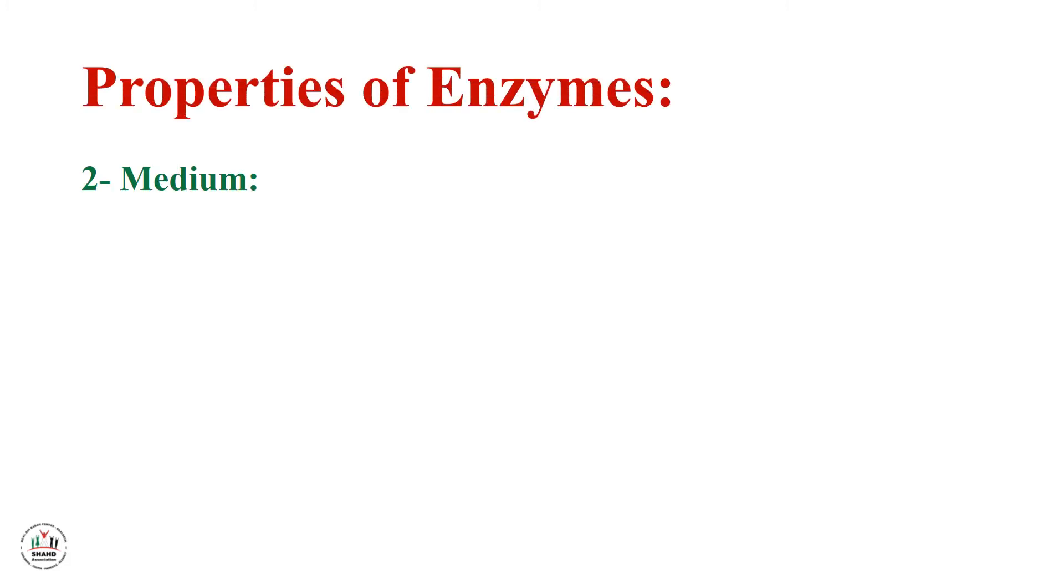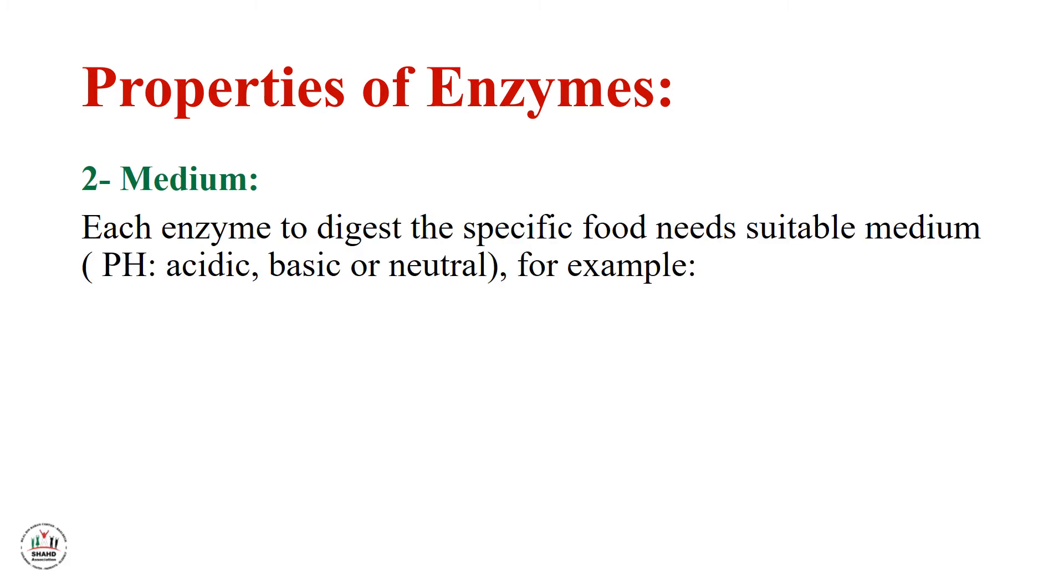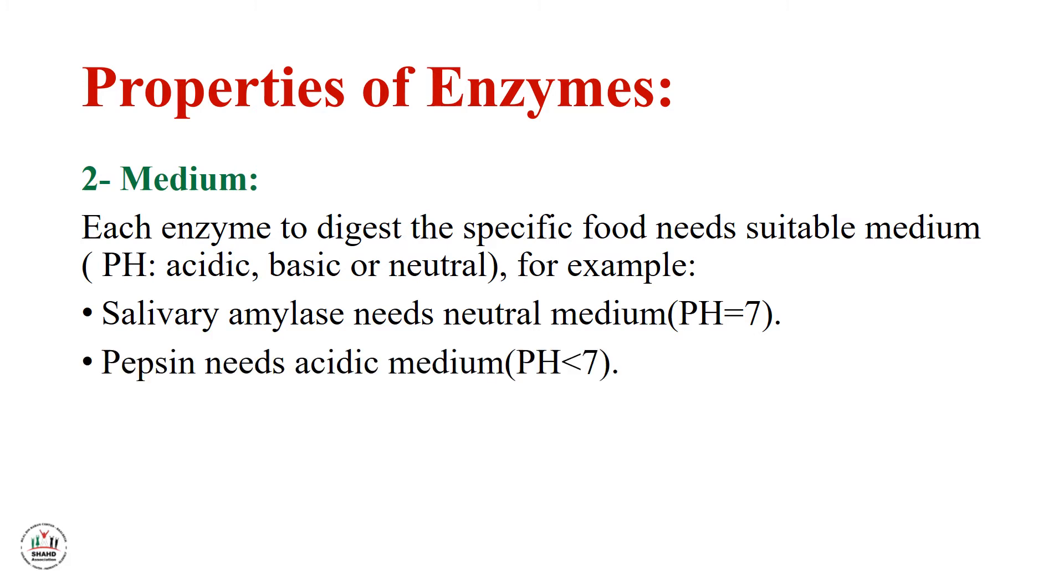The second property of enzyme is medium. Each enzyme to digest the specific food needs suitable medium - pH acidic, basic or neutral. For example, salivary amylase needs a neutral medium, pH equals 7. Pepsin needs acidic medium, pH less than 7. All other enzymes need basic medium, pH more than 7.